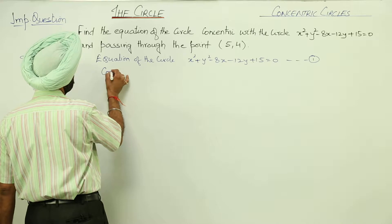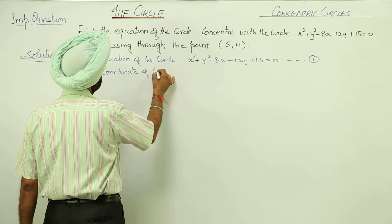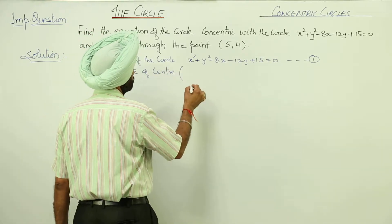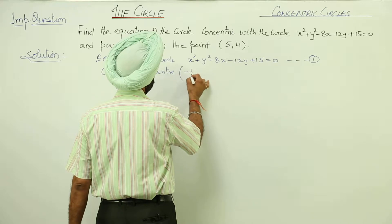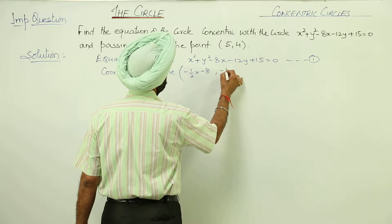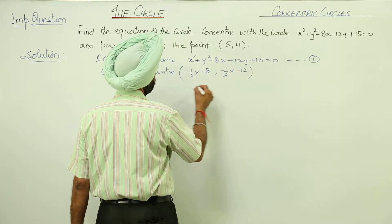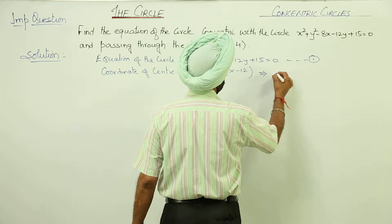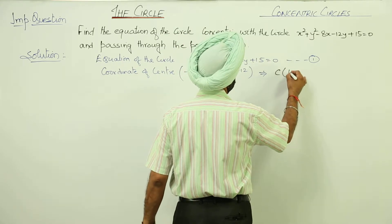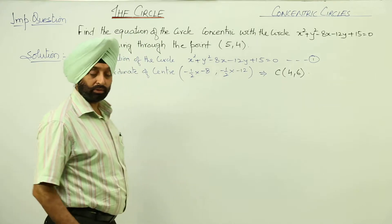Coordinates of the center are negative of half the coefficient of x, negative of half the coefficient of y. Coordinates of center are (4, 6).